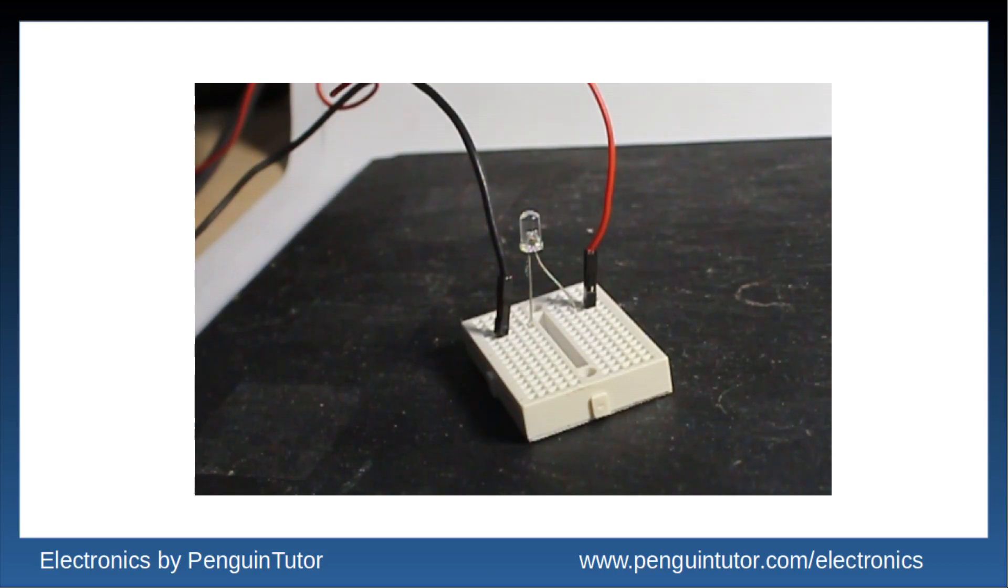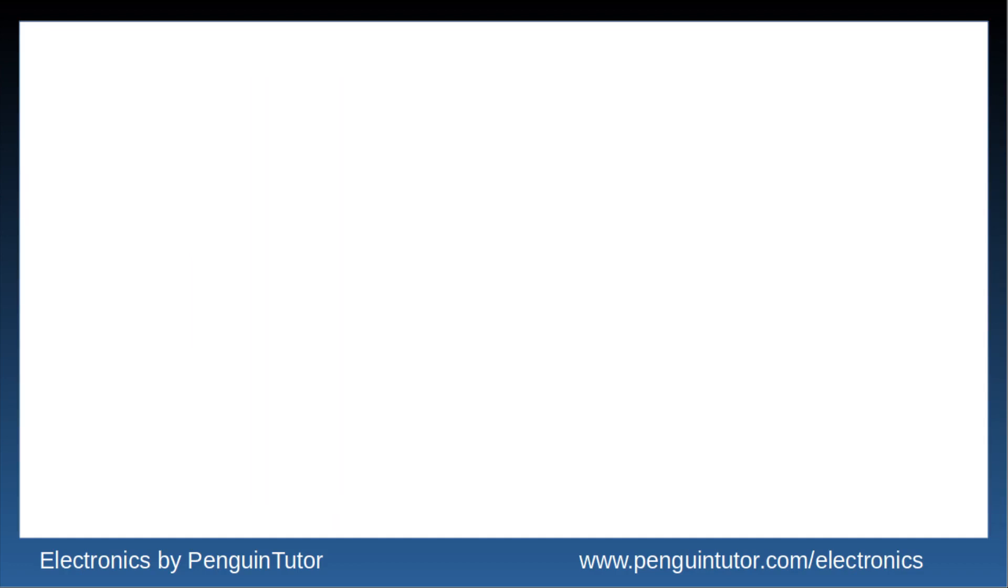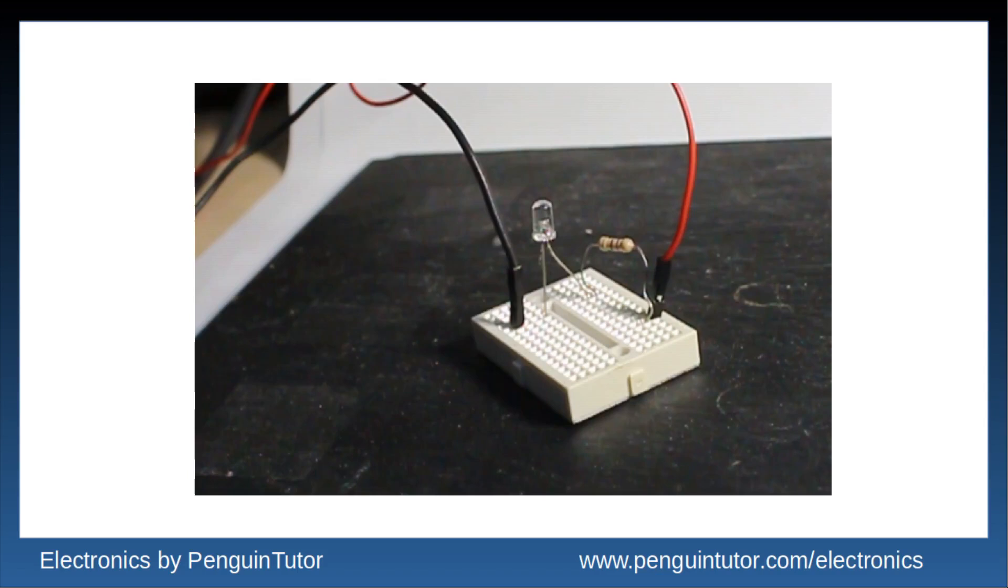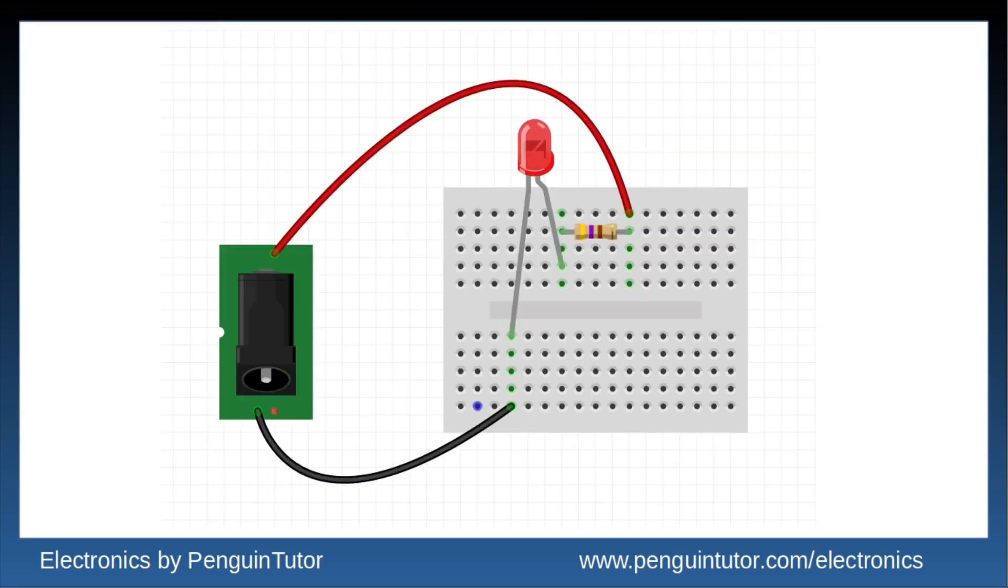If we now add a resistor in between the power supply and our new LED, the resistor can be on either the positive or negative side, then it reduces the amount of current that flows through the LED. There is less current flowing. The LED lights up and it won't be damaged.